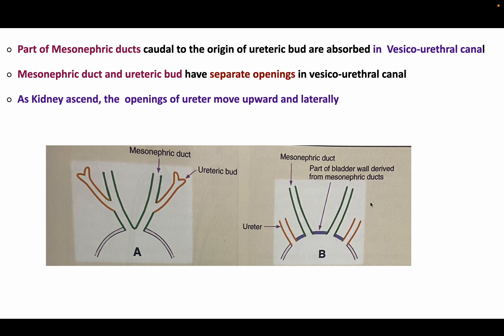The parts of the mesonephric ducts caudal to the region of the ureteric bud are absorbed into the vesicourethral canal. After this absorption, the mesonephric duct and the ureteric buds have separate openings in the vesicourethral canal.